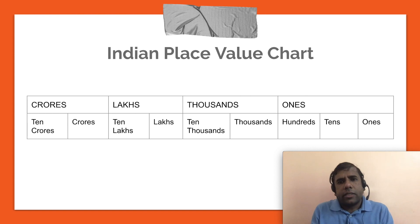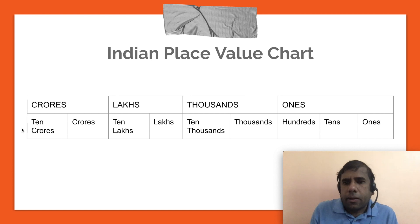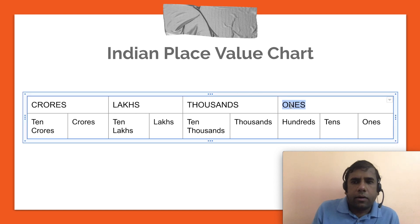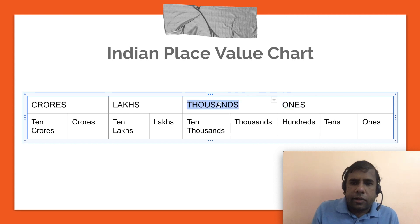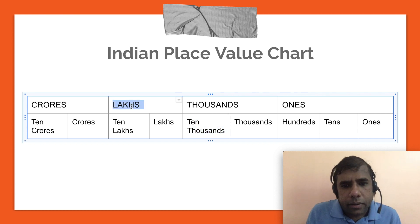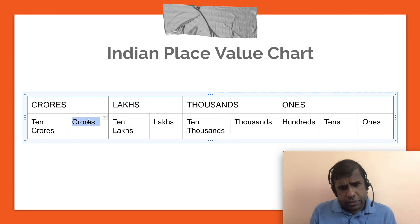To help us read and write these numbers, there is a place value chart. The rightmost period is the ones period, comprising ones, tens, and hundreds places. Then a thousands period comprising thousands and ten thousands places. Then a lakhs period comprising lakhs and ten lakhs places. And finally a crores period comprising crores and ten crores places.